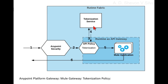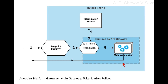Four, the tokenization service receives the tokens, transforms them, and returns the result to the policy. Five, the policy replaces the payload with the tokenized values and forwards to the mule application. Six, the mule application processes the request and returns the result.